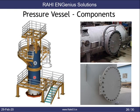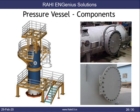Vessels have platforms and ladders installed for access during installation, operation, and shutdown. These can be rectangular platforms or circular platforms. A cage ladder has a protective cage structure around it, while a normal ladder does not have a cage.